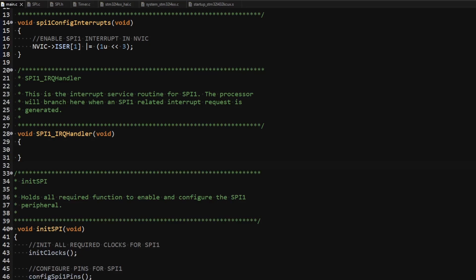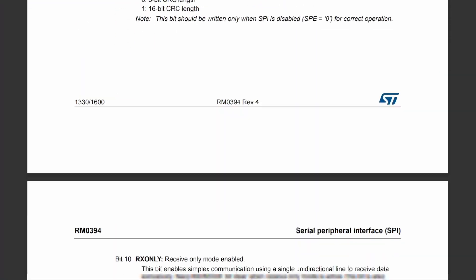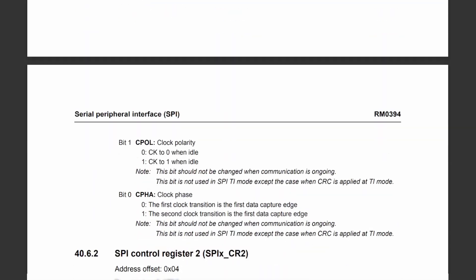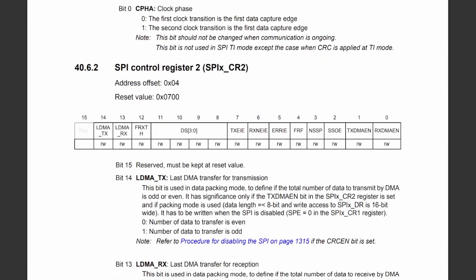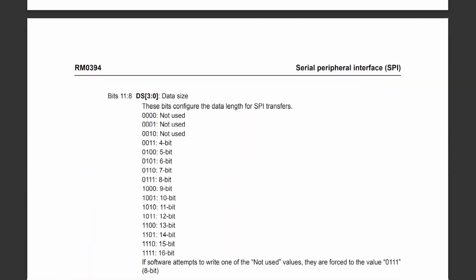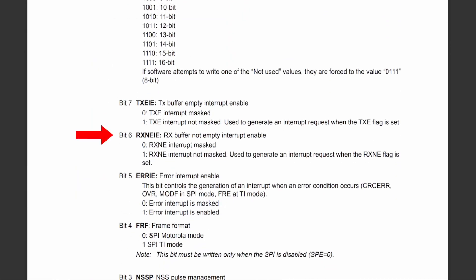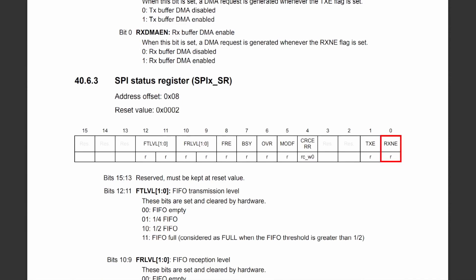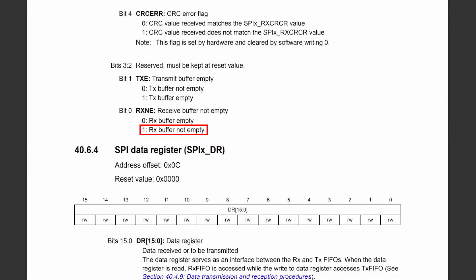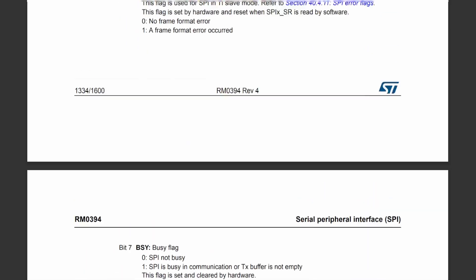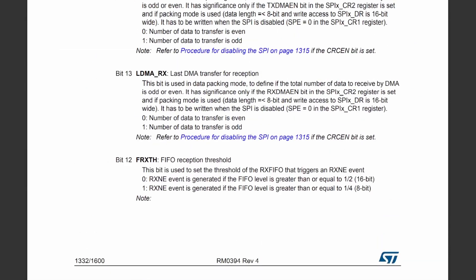The code I add in the interrupt handler will depend on which interrupt I am working with, so I have to enable interrupt request generation for at least one of them. All the bits used to enable the specific interrupt requests are located in the SPI control register 2. Let's first consider receive buffer not empty interrupt request generation, which is enabled by setting bit 6 of this register. This interrupt request will be generated when the RxNE flag is set, which is located in the SPI status register and is also controlled by the FRxTH bit, which is bit 12 of control register 2.